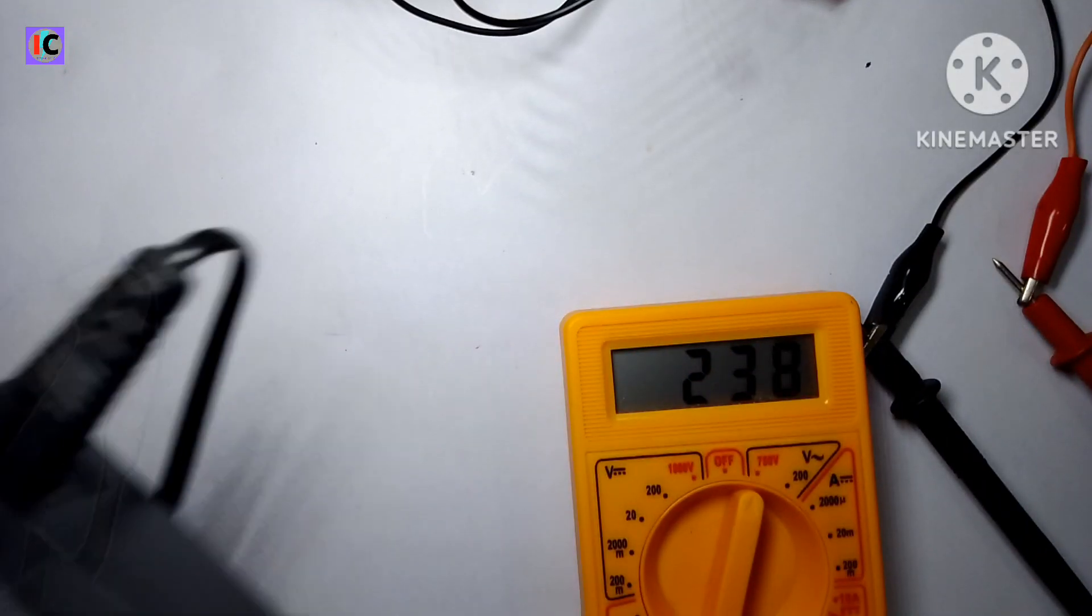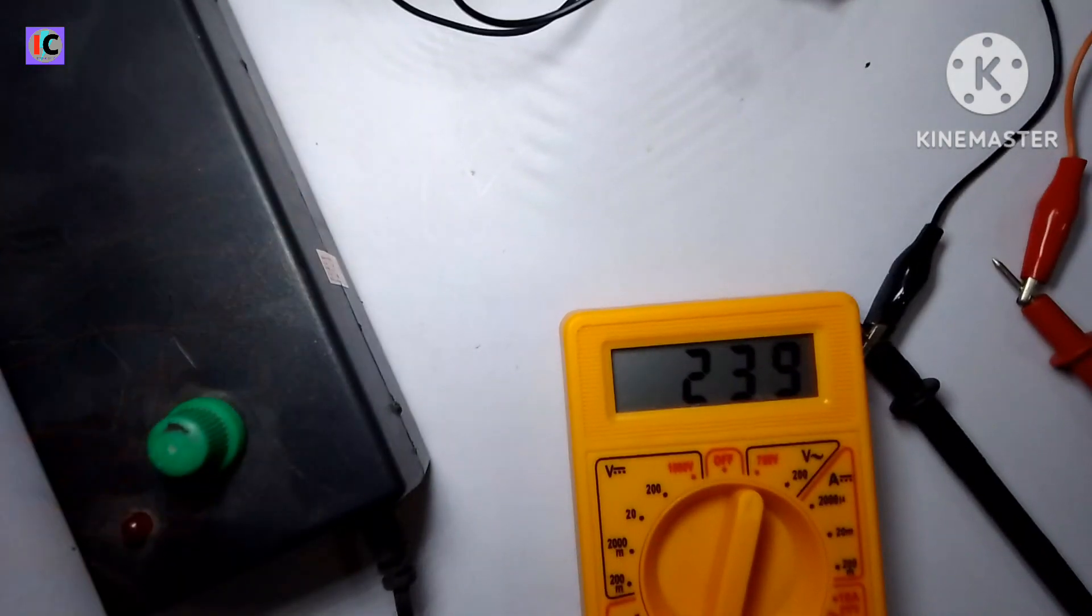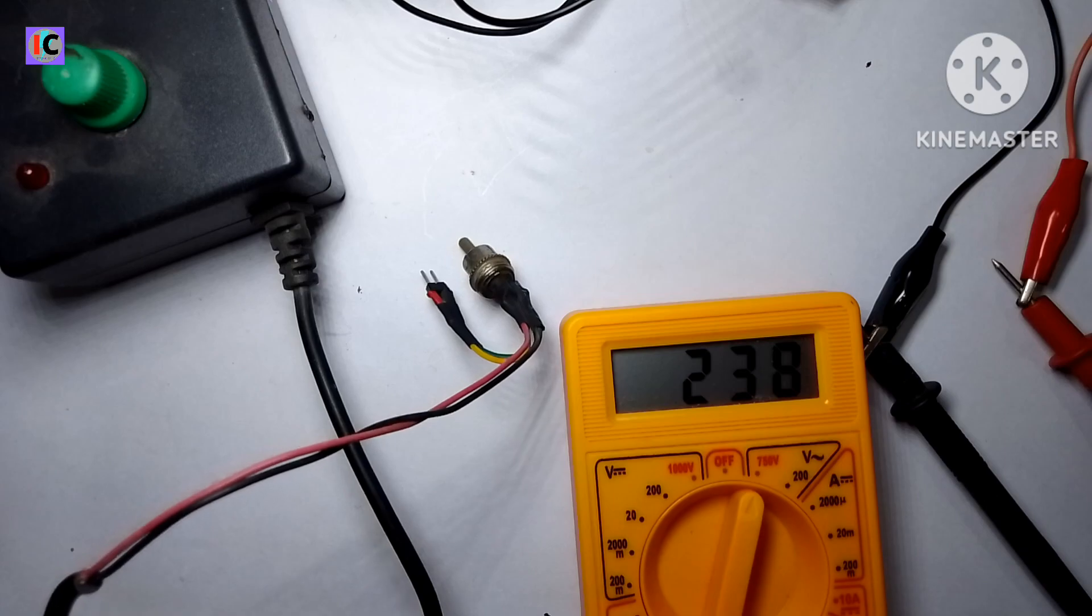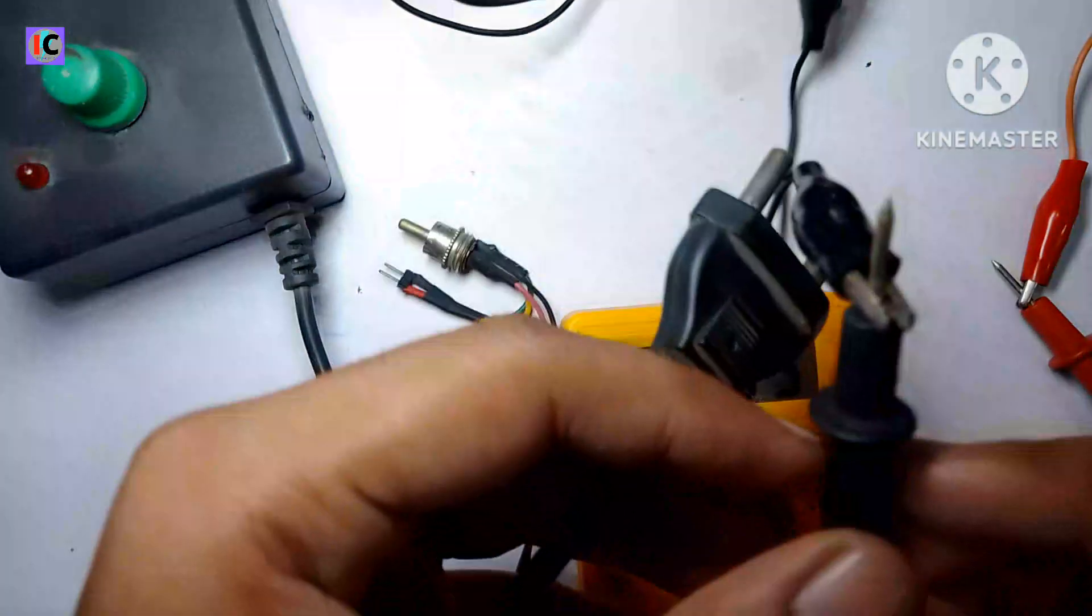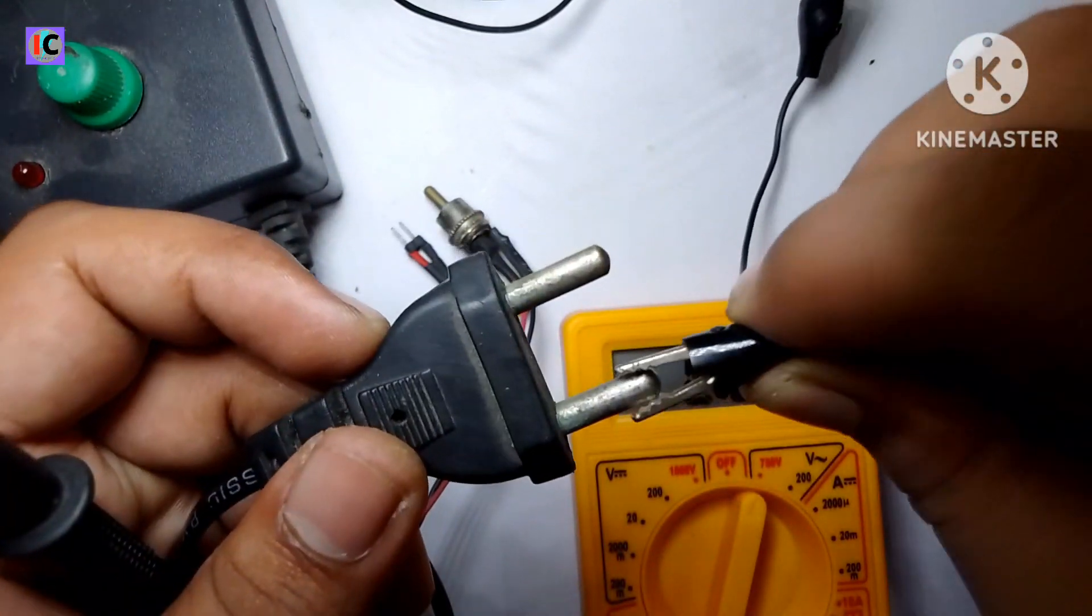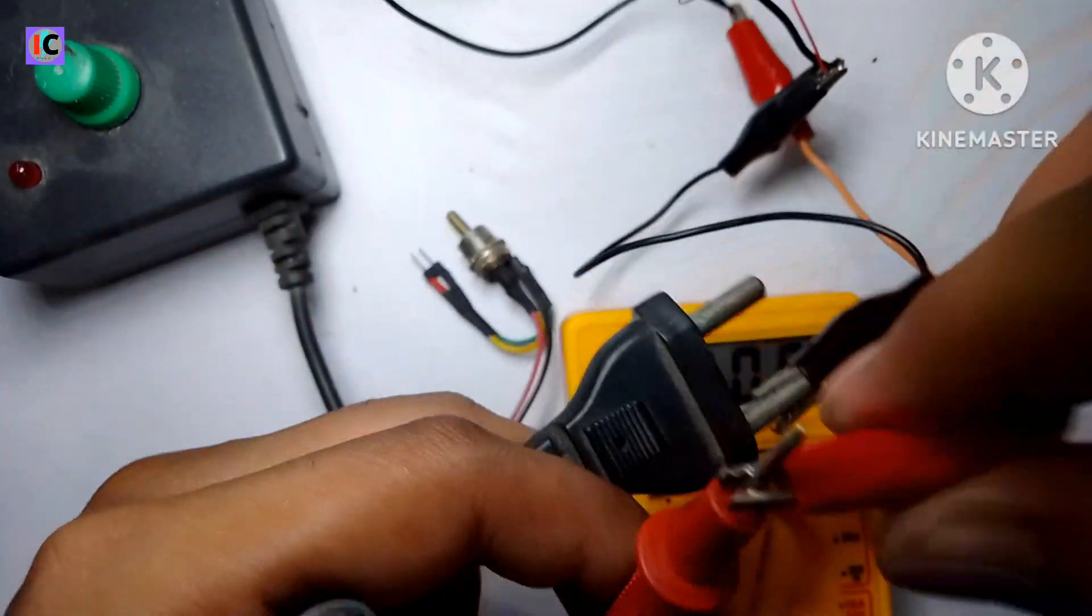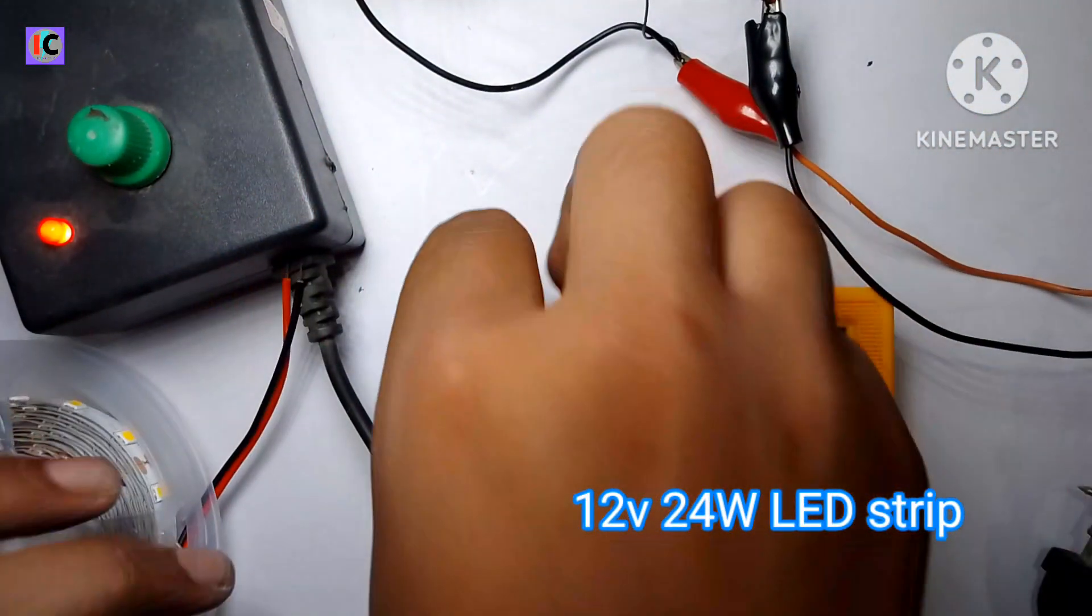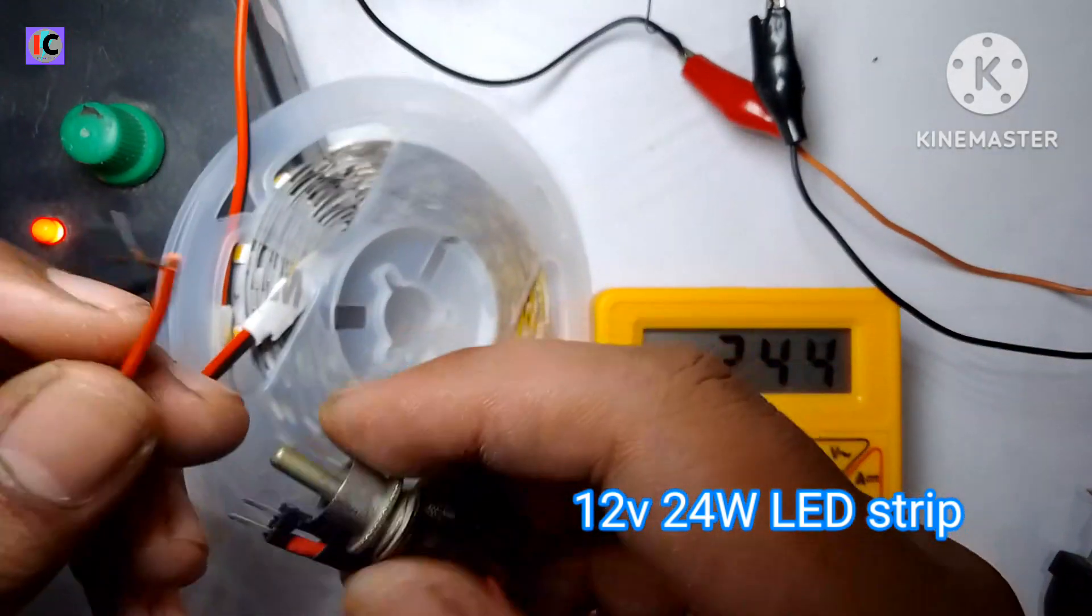You can see it's a 12 volt 5 ampere SMPS, which is also connected at the output of this inverter and tested with this inverter. Now you can see the output cables are connected, and this is a 12 volt 24 watt LED strip of 5 meters.